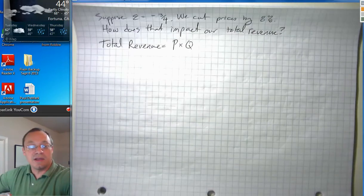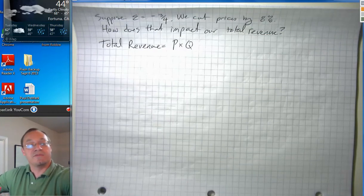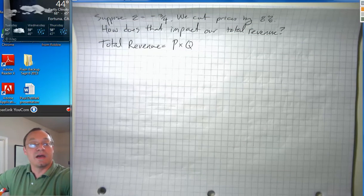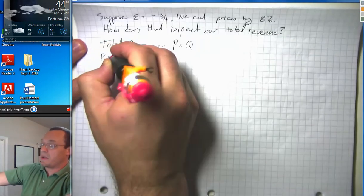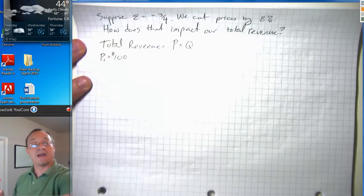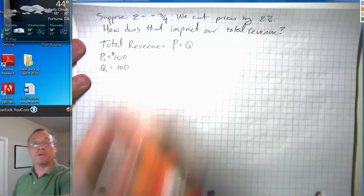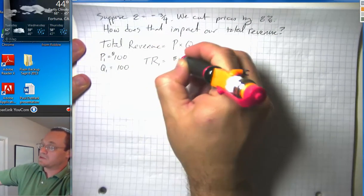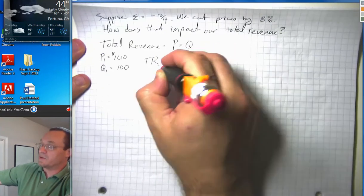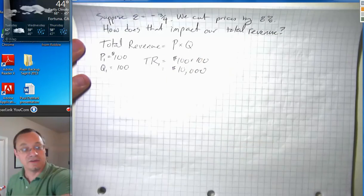I'm going to use a numerical example method here. This is not going to be a general proof, but it will give you a way to solve the problem that's probably easier for most students than a more general algebraic version. So I'm going to suppose that my initial P1 is a nice round one hundred dollars, and my initial Q1 is a nice round one hundred units. So my initial total revenue one is one hundred dollars times one hundred units, and that gets me to ten thousand dollars.